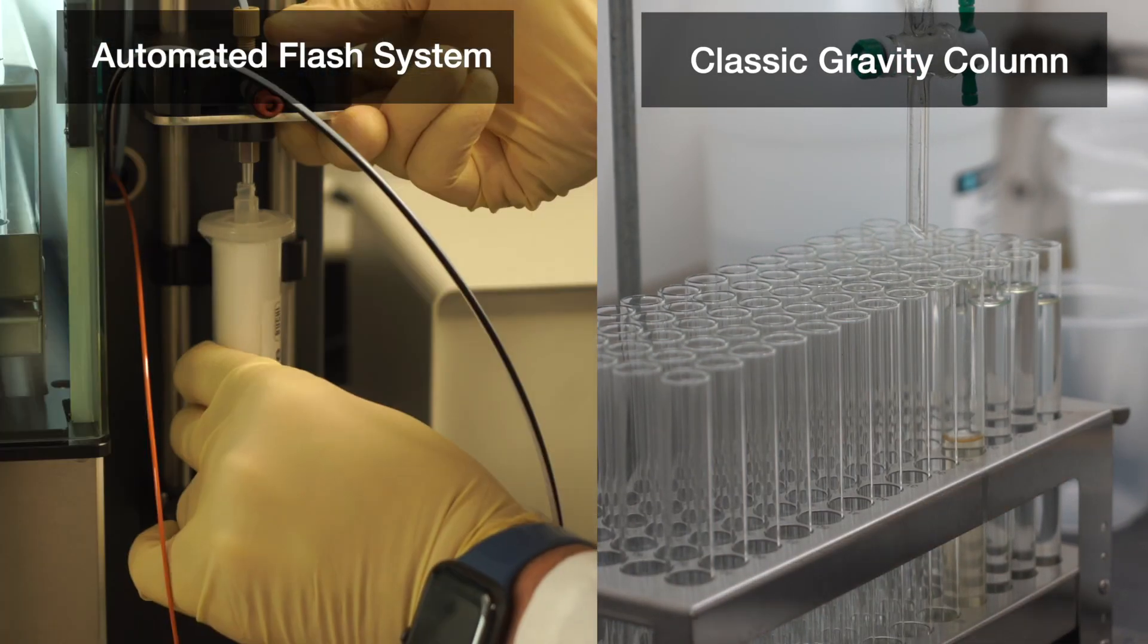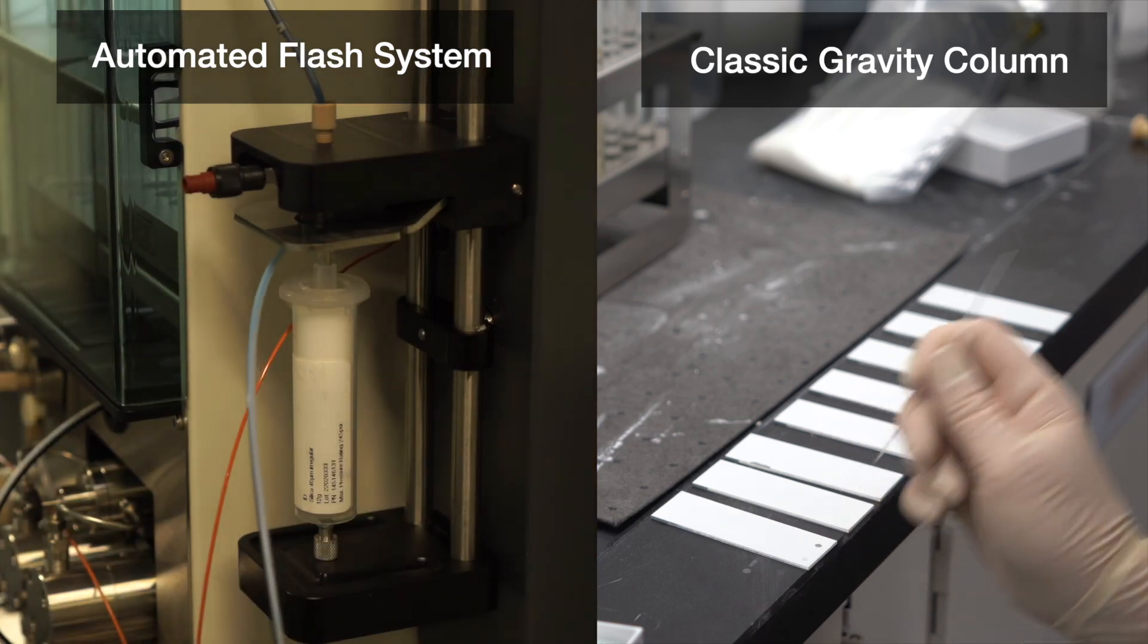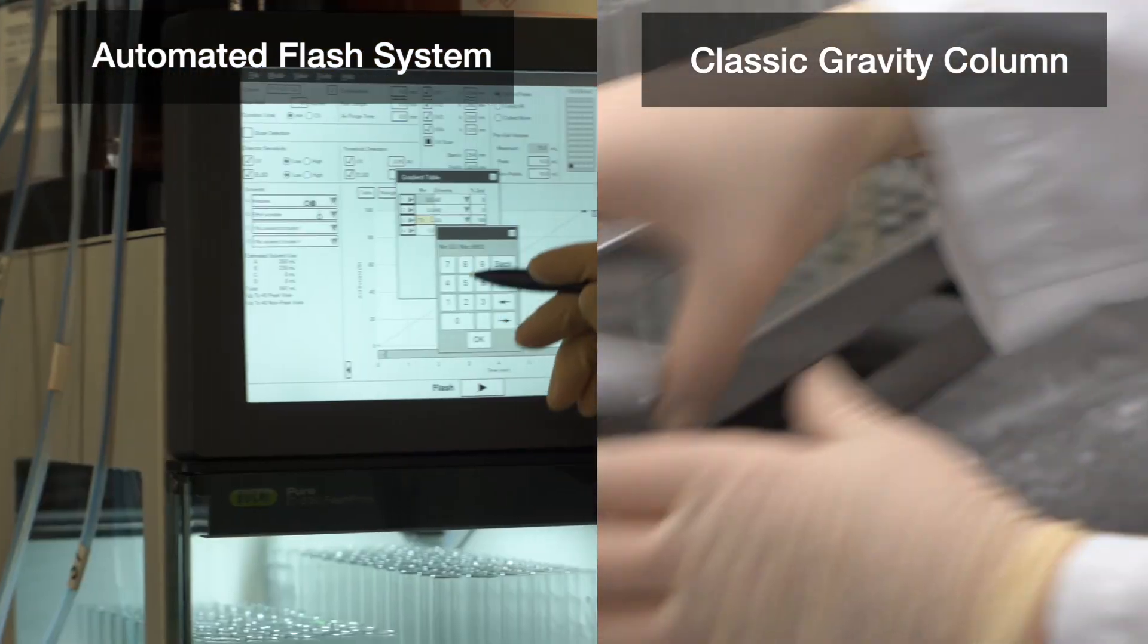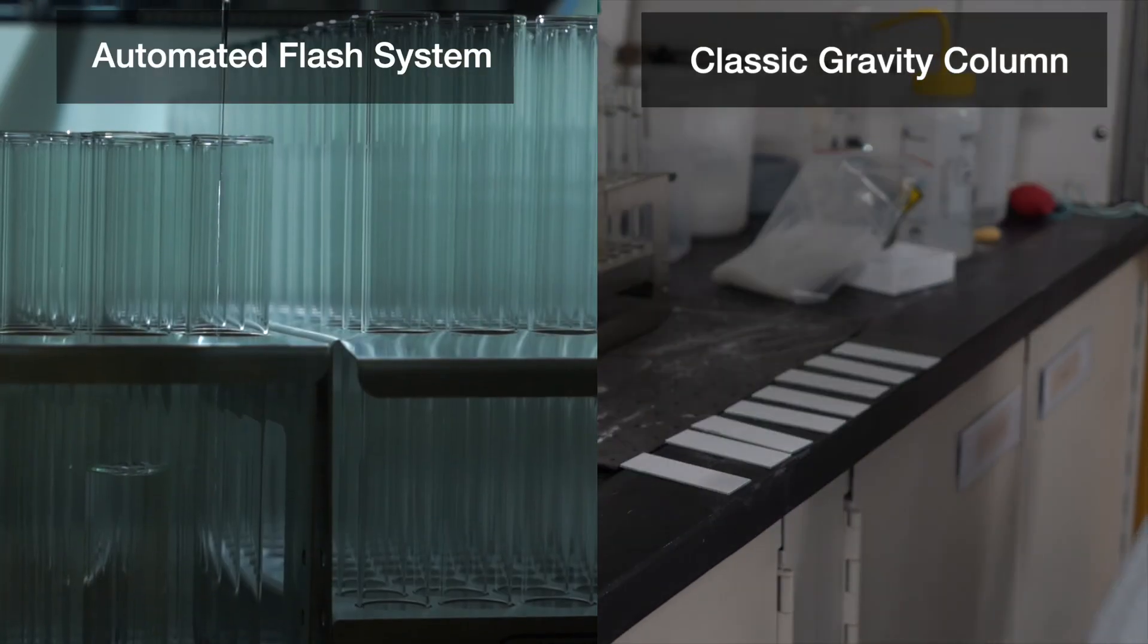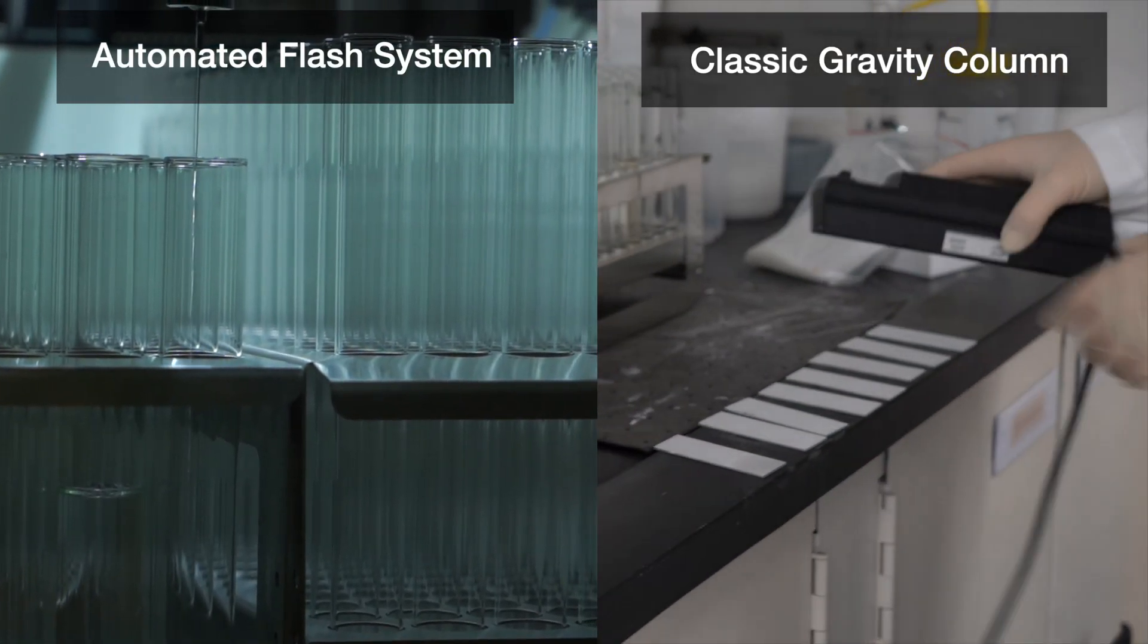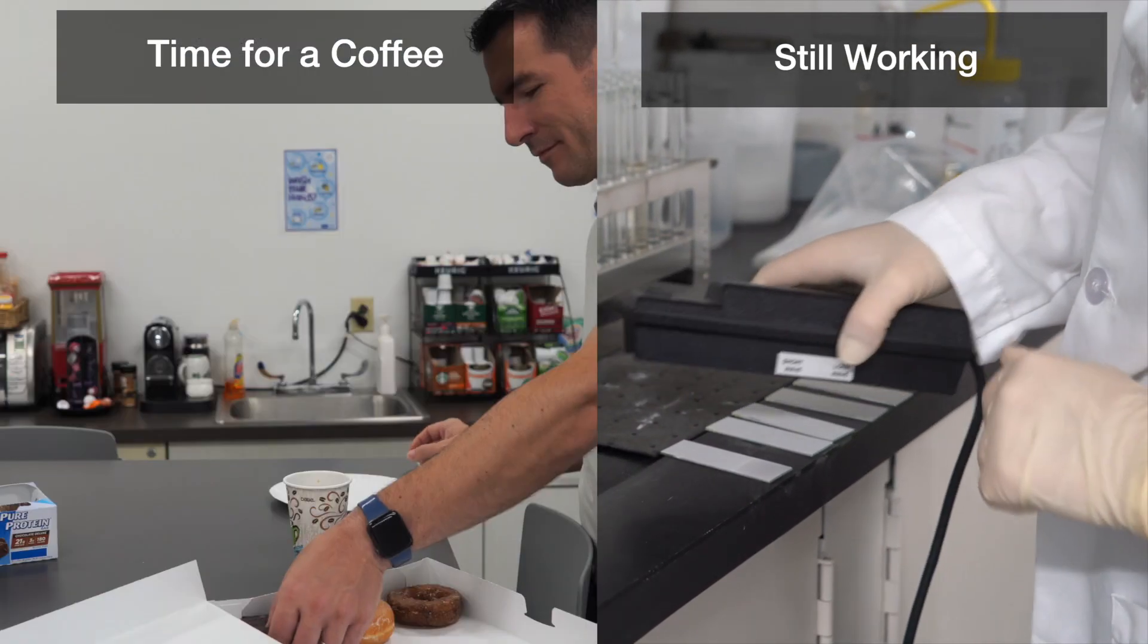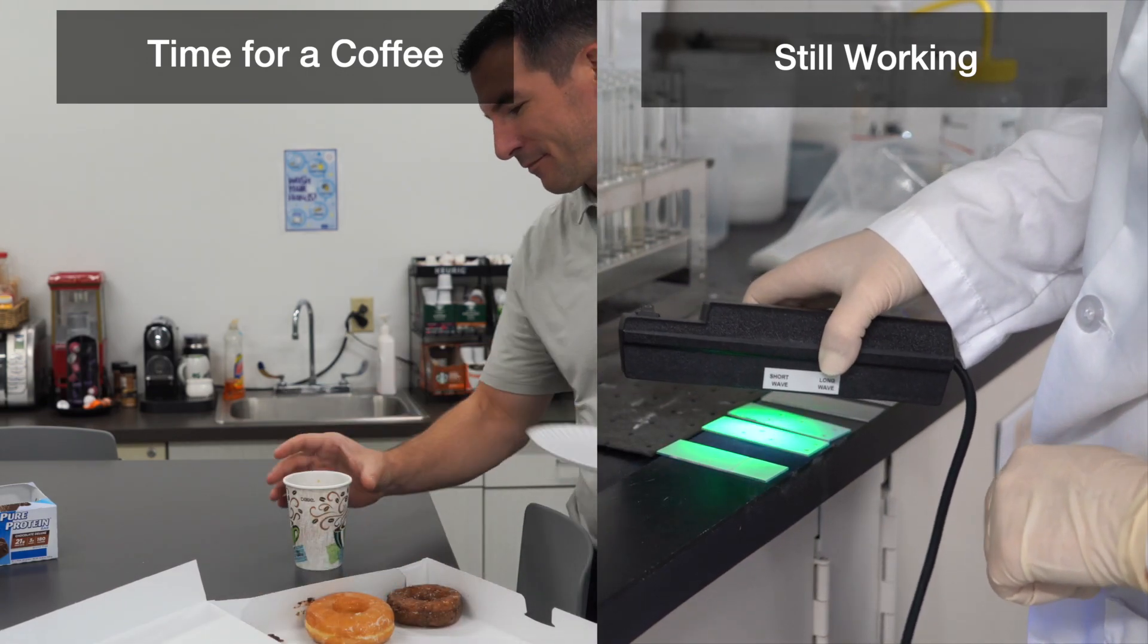With classical gravity columns, fraction collection is performed by the user and without the UV or ELS detector. You have no idea what is in each of these tubes, so you have to run the TLC column on each sample. Matty is going to struggle to find time to do much else than run TLC plates today.